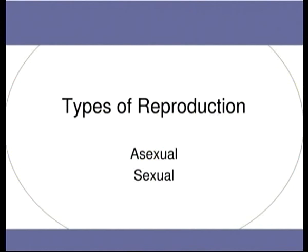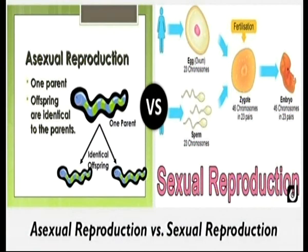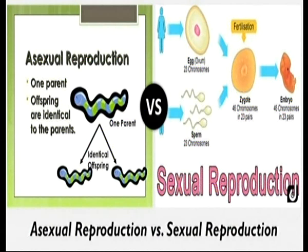There are two basic types of reproduction: asexual reproduction and sexual reproduction. Asexual reproduction is monoparental — only one parent is involved — while sexual reproduction is biparental, involving two parents. In asexual reproduction, the offspring are identical to the parents; they are clones, morphologically and genetically similar. There is no gamete formation in asexual reproduction, whereas sexual reproduction involves gamete formation and fertilization.